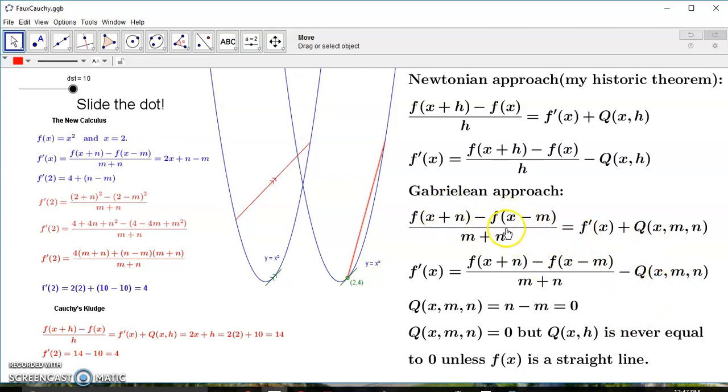So this expression here is always equal to f'(x) because Q(x,m,n) is zero. So you have a 100% rigorous calculus in my new calculus.